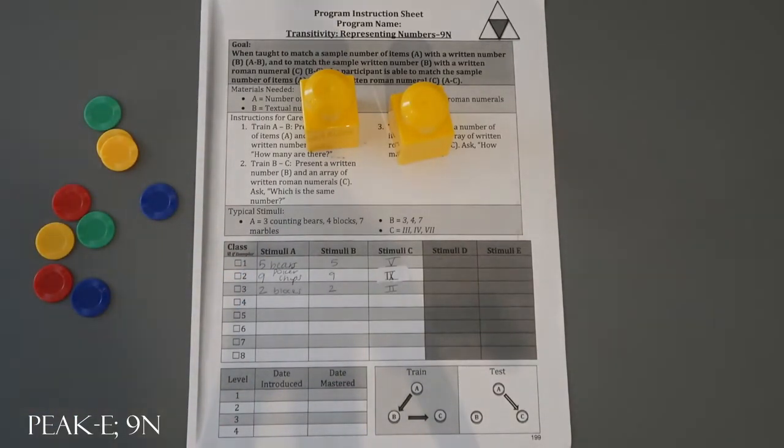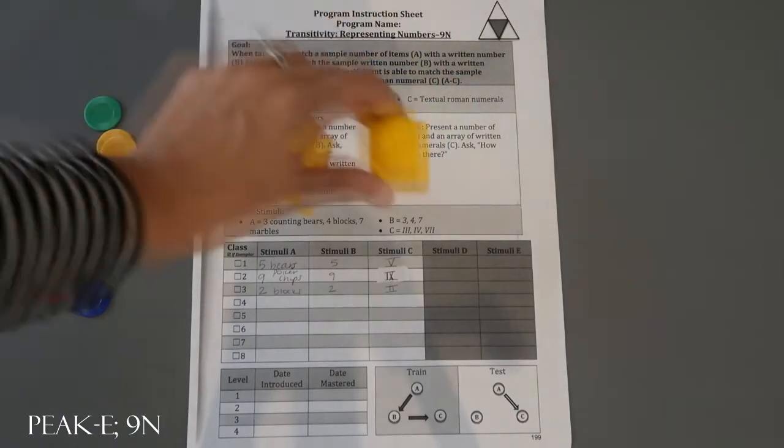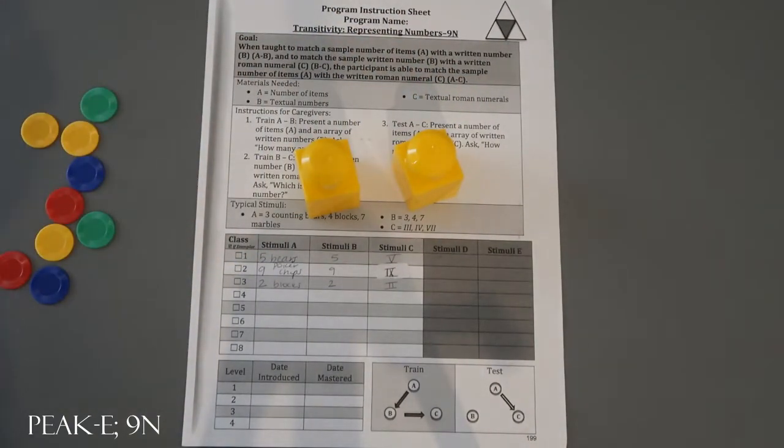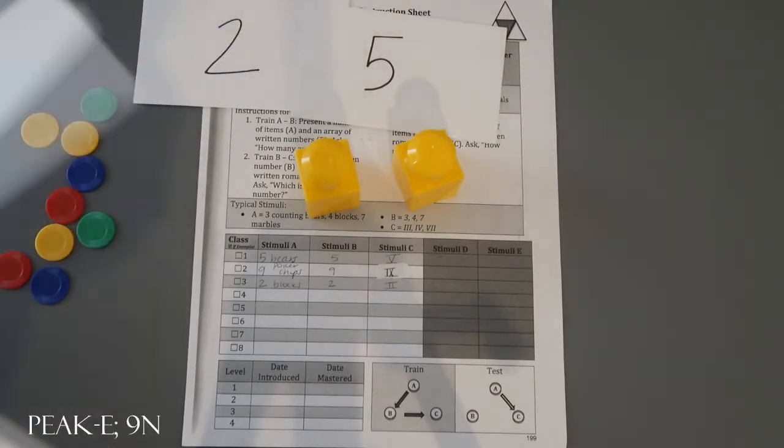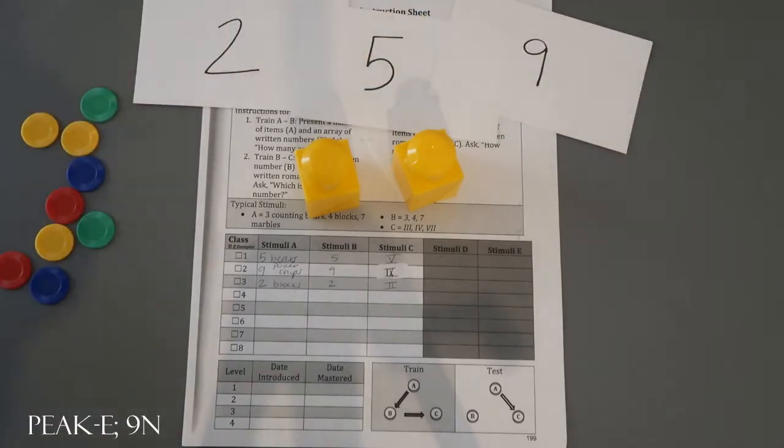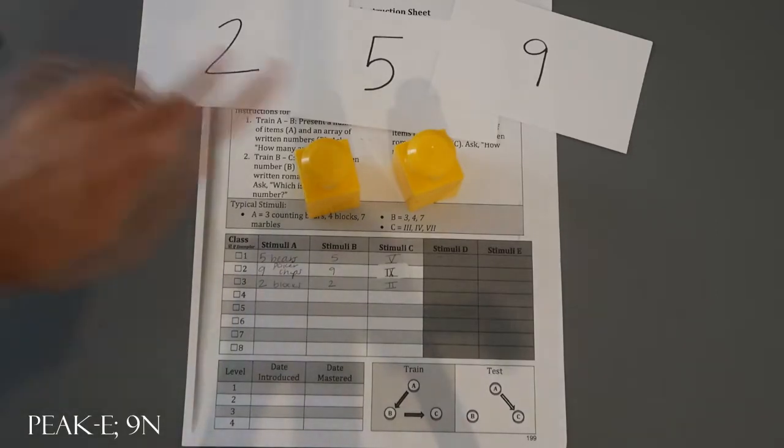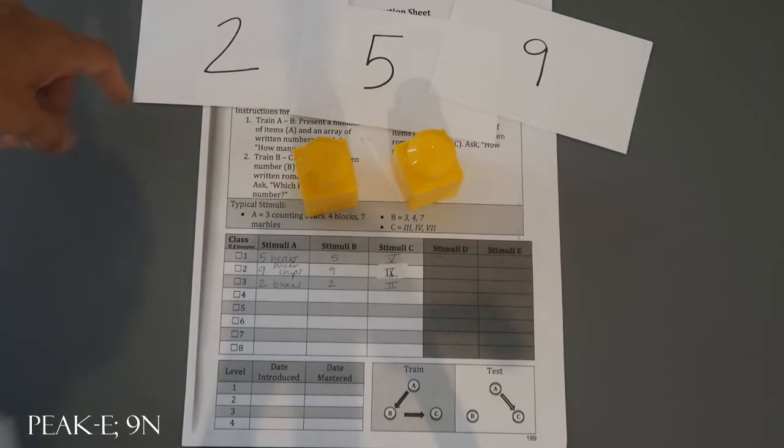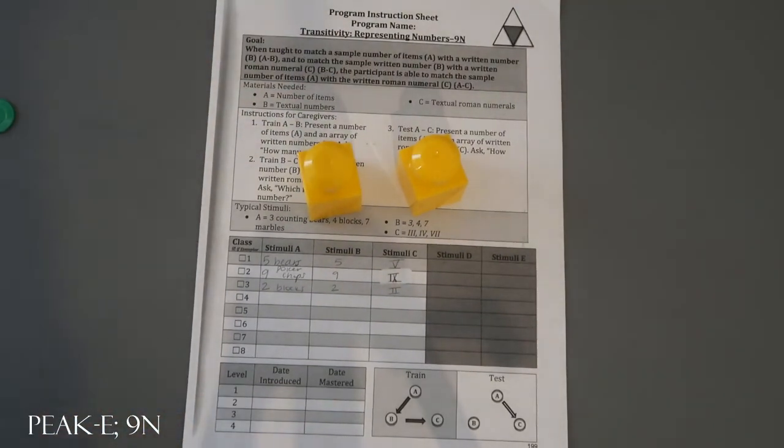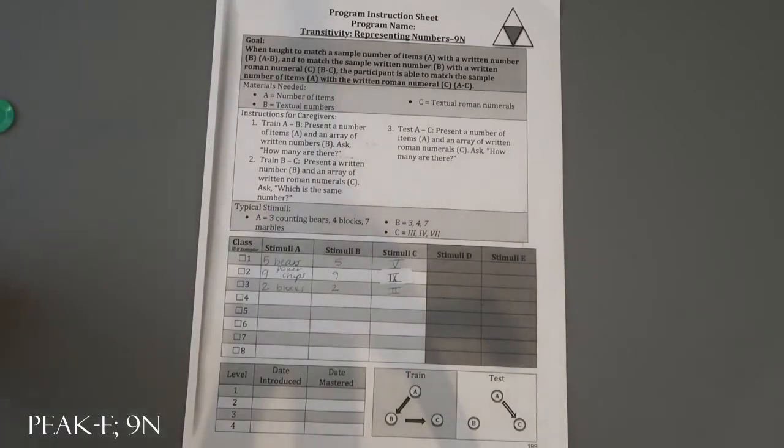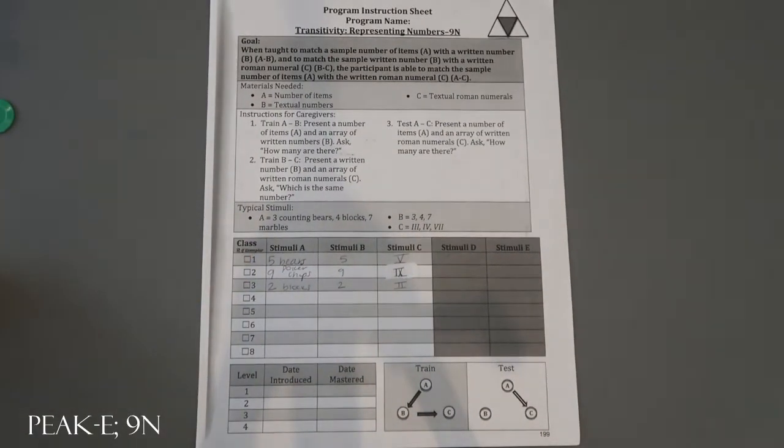To run A to B, you're going to present those items for the participant and then lay out your number cards. You would say how many are there, and they would hopefully pick the correct number. For train A to B, you're going to be able to prompt, give feedback, represent the stimuli, and obviously praise and reinforce. That is how A to B would be run.